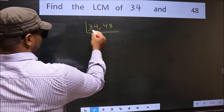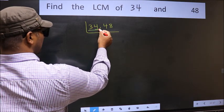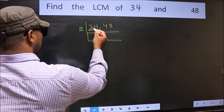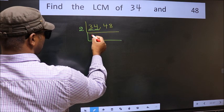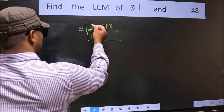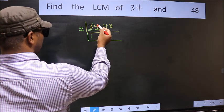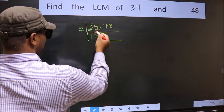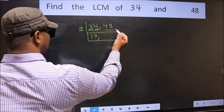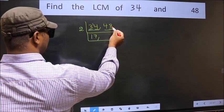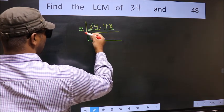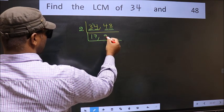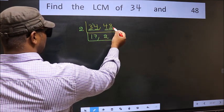Now focus on the first number, which is 34. The last digit is 4, which is even, so take two. 34 divided by 2: three minus two is one, carry forward 1 — giving 17. For the other number 48, the last digit is eight, which is even, so it is also divisible by two. 48 divided by 2 gives 24.